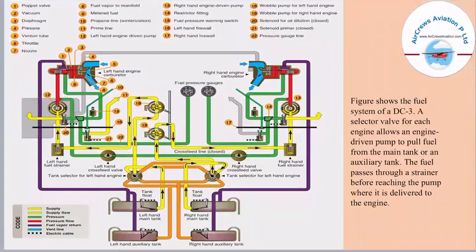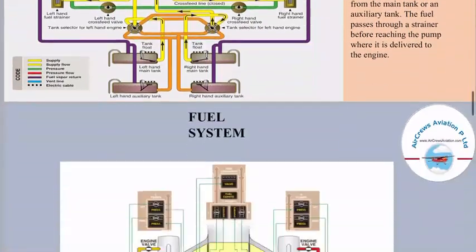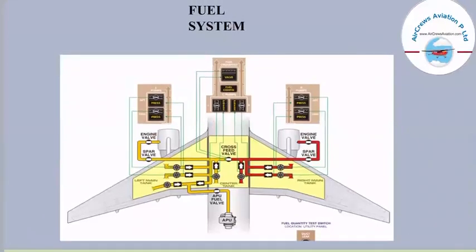This figure shows the fuel system of a DC-3. A selector valve for each engine allows an engine-driven pump to pull fuel from either the main tank or an auxiliary tank. The fuel passes through a strainer before reaching the pump, where it is delivered to the engine. The yellow lines show the supply flow, green is for pressure, red is for the pressure flow, violet shows fuel vapor return, and blue shows the vent line.